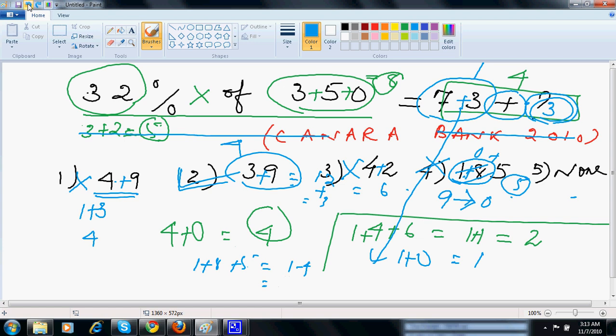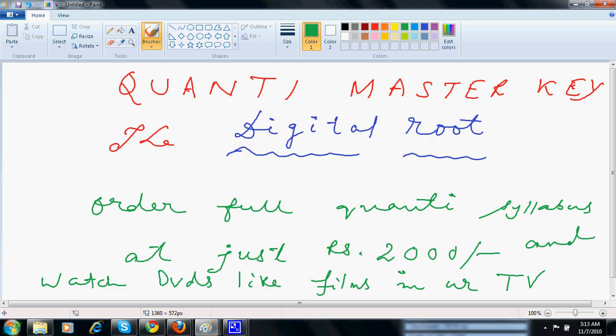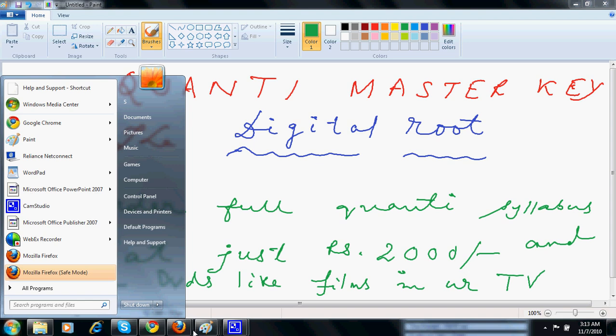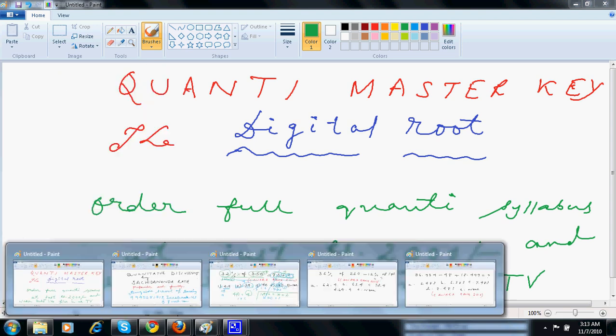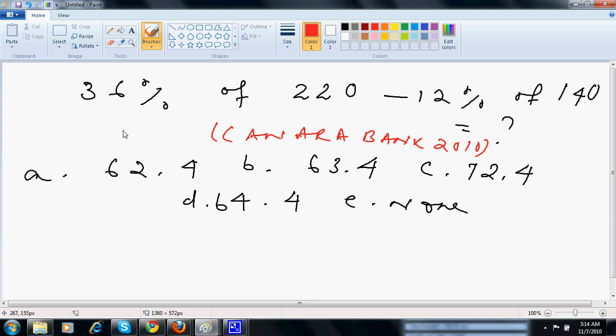I will come to this question which came in Canara Bank 2010. 36% of 220 minus 12% of 140 is how much? Options are 62.4, 63.4, 72.4, 64.4, or none. I've changed the options a bit to explain better.